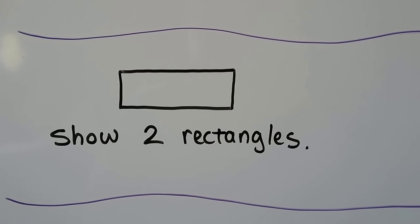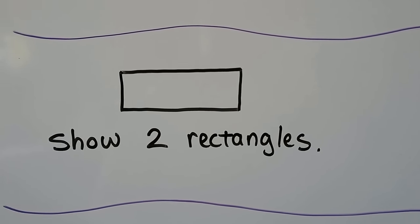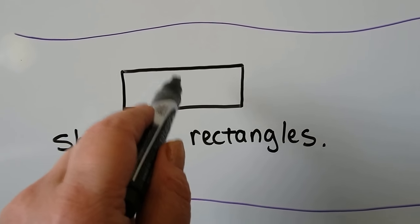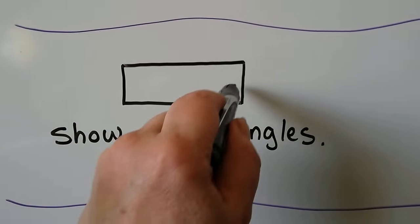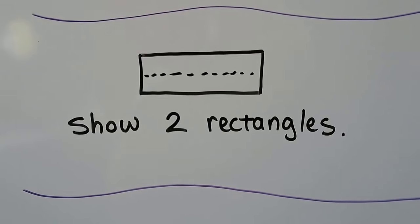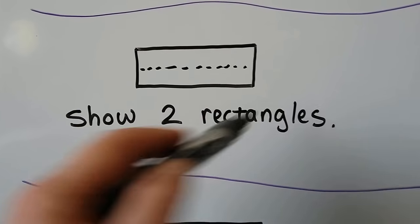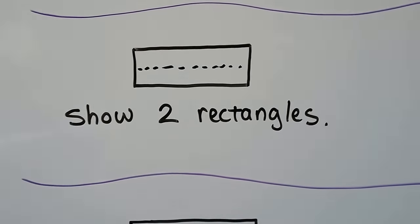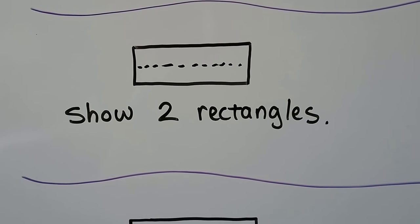Show two rectangles. We have one rectangle that wants us to show two rectangles inside of it. So if we go like this and split it down the middle in half, we'll have a rectangle here and a rectangle here — two long skinny rectangles.